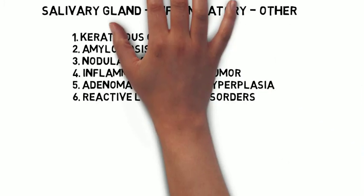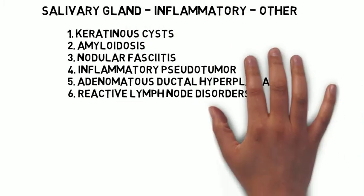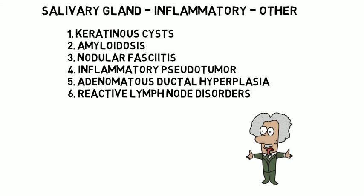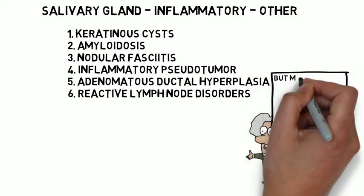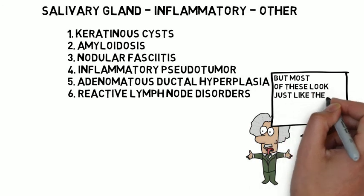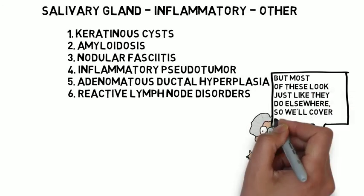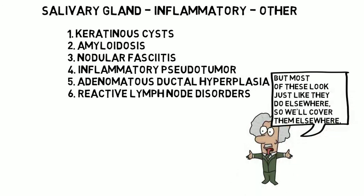Now let's talk about the more miscellaneous other lesions. These include keratocysts, amyloidosis, nodular fasciitis, inflammatory pseudotumor, adenomatous ductal hyperplasia, reactive lymph nodes, and so on. Most of these look like they do in other areas, so we'll cover them when we get to those other areas.